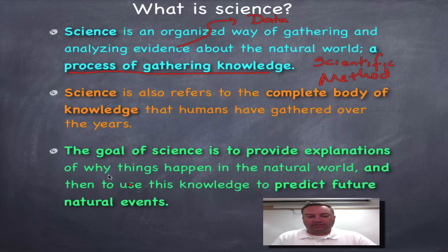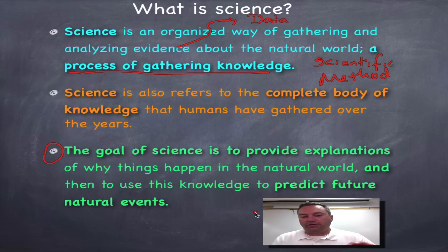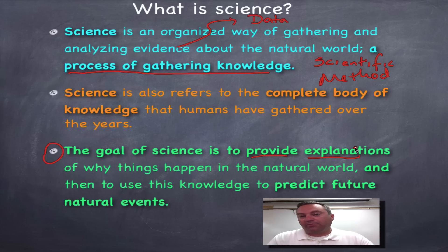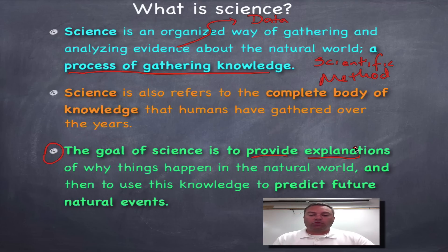The number one goal of science is right down here, and I really want you to pay attention to that, because this is what we're going to be learning about all year. The goal of science is to provide explanation — why did this happen, when is it going to happen again, what causes it, how did it happen.